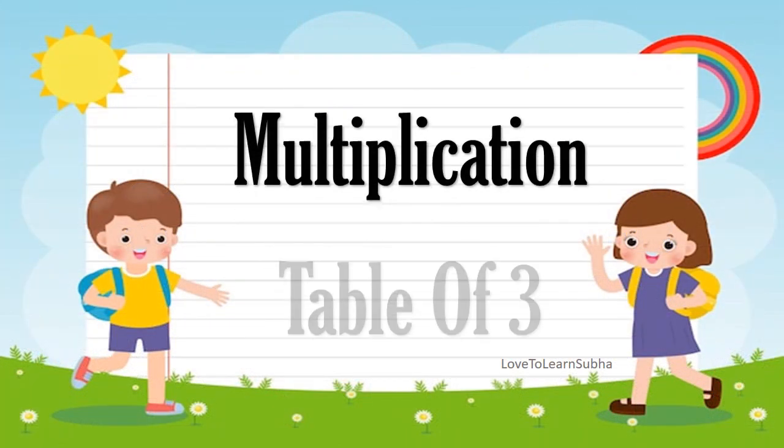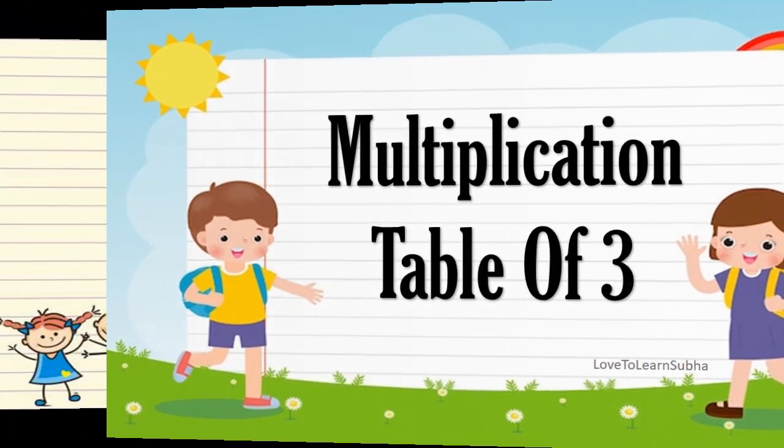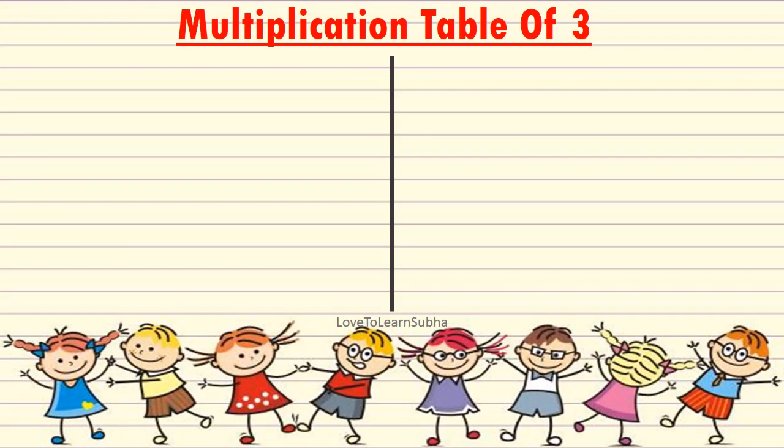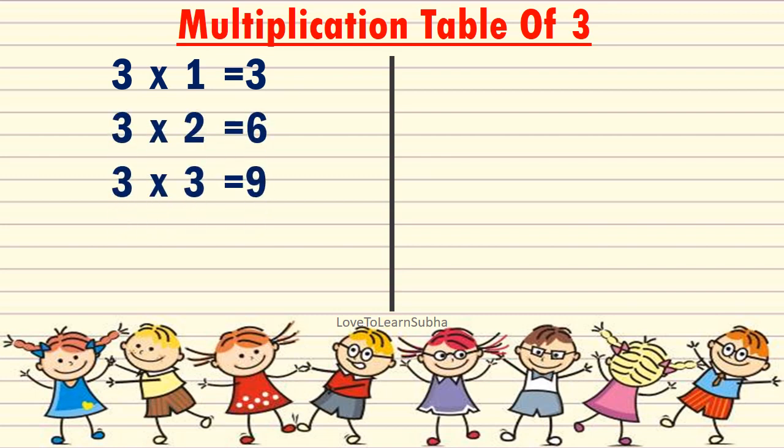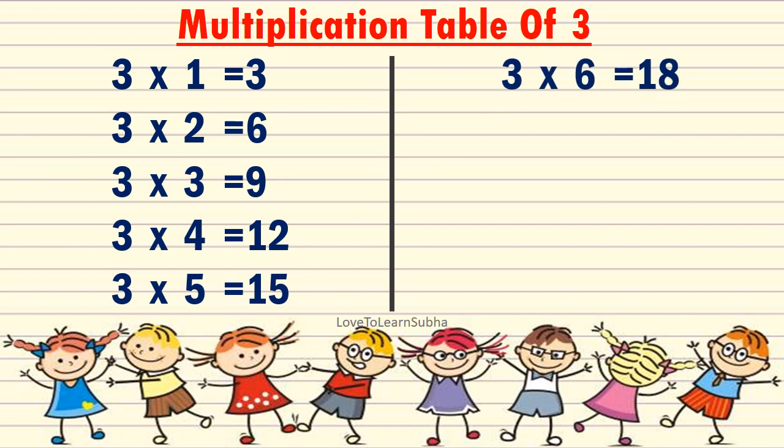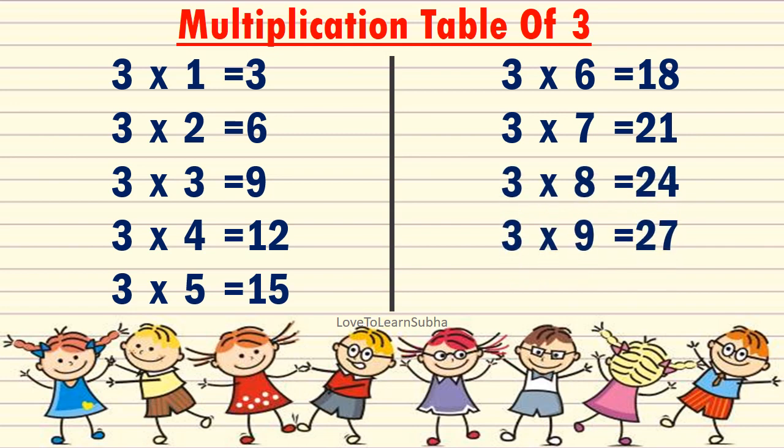Multiplication table of 3: 3 1s are 3, 3 2s are 6, 3 3s are 9, 3 4s are 12, 3 5s are 15, 3 6s are 18, 3 7s are 21, 3 8s are 24, 3 9s are 27, 3 10s are 30.